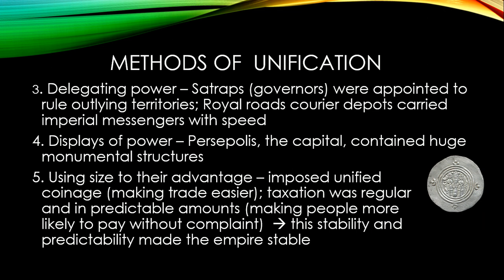A third method to unify a large empire is to delegate power. The Shah, or emperor, gives some of his power directly to governors in outlying territories. Every empire divides territory into provinces, each ruled by a governor — in Persia's case, a satrap. Royal road couriers connected satraps with the capital, and the emperor also displayed his power monumentally. Persepolis was the capital, featuring huge monumental structures.